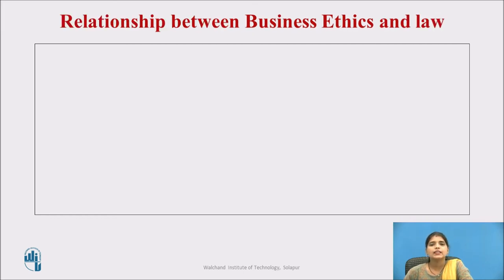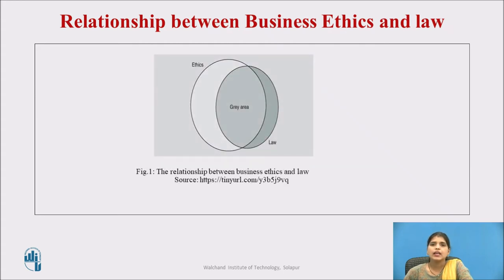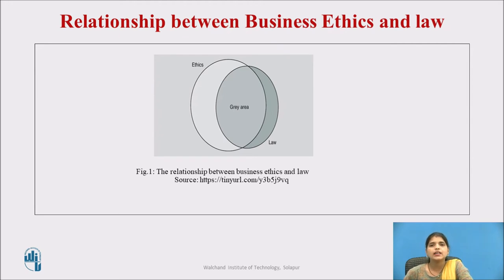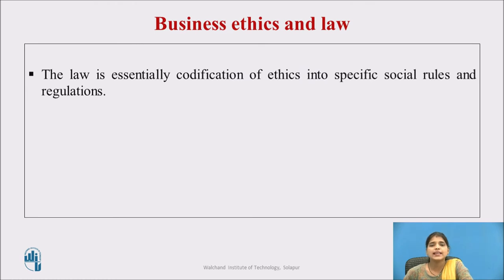Now we will see the relation between business ethics and the law. In this figure, one area is ethics and another area is law. The common area — the overlap between ethics and the law — is referred to as a grey area. Business ethics deals with issues of right and wrong, and one might question whether this is distinct from the law. There is considerable overlap between ethics and the law. In fact, the law is essentially a codification of ethics into specific social rules and regulations.